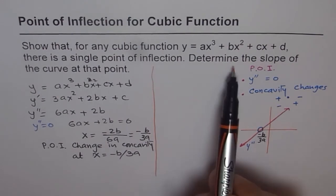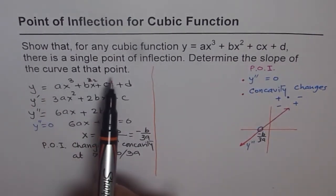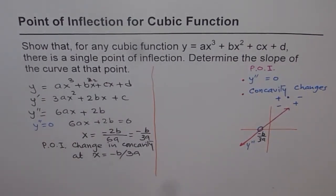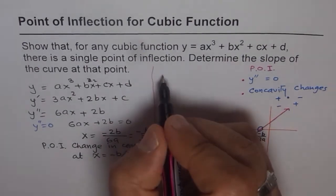Now the second part is, determine the slope of the curve at this point. That means we already found y dash. So let me write down y dash and then find the slope. So let us do part 2, that is slope.